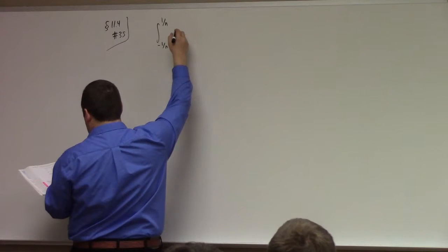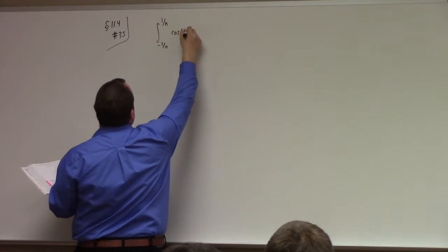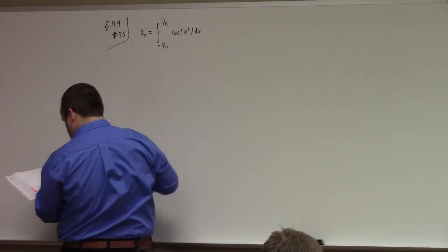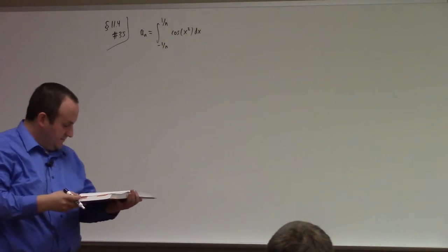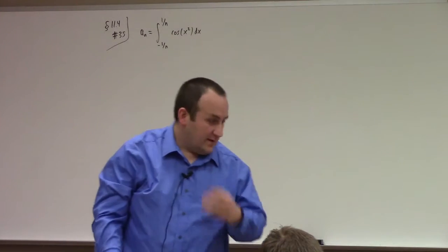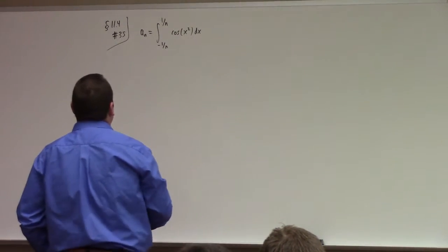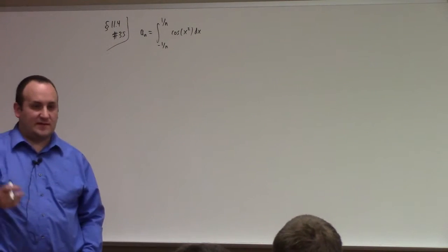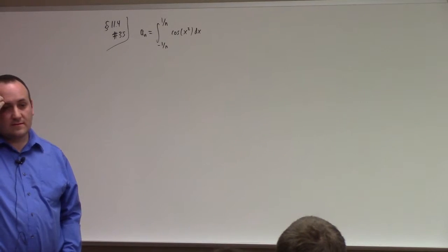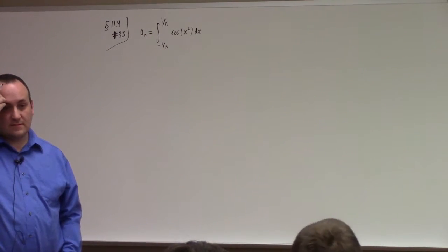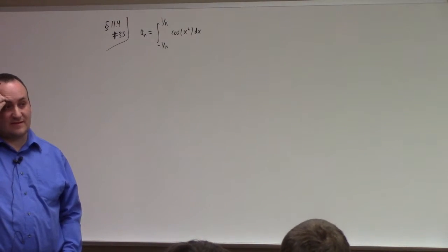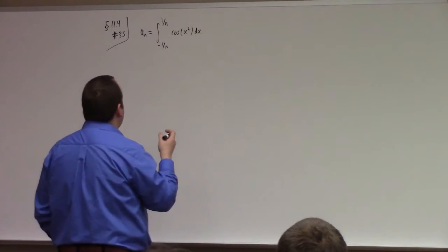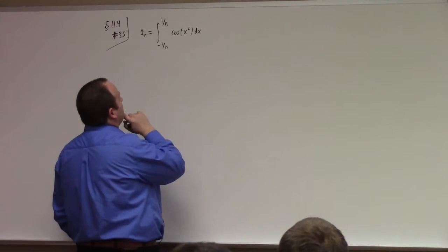Now, what are you supposed to do? You're supposed to state whether the sequence converges. This is section 11.4? Actually, I can take this example and raise you a similar example. I'll do it for cosine of x squared.